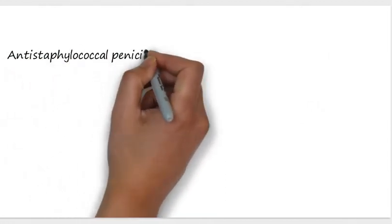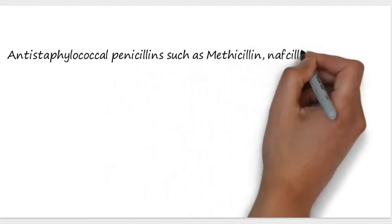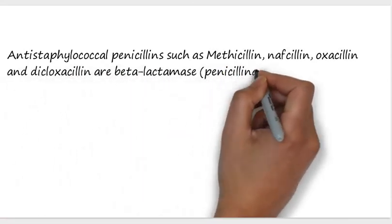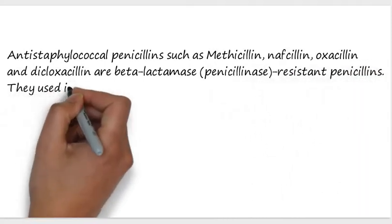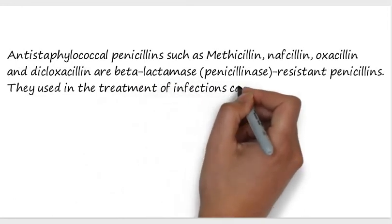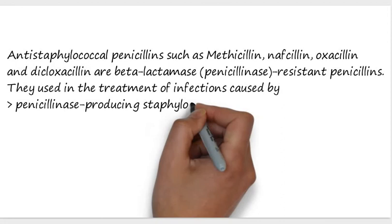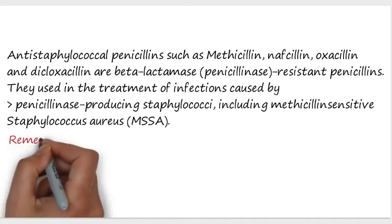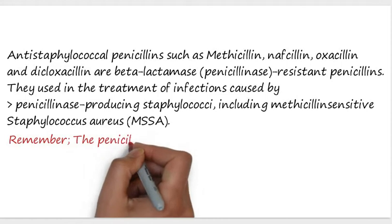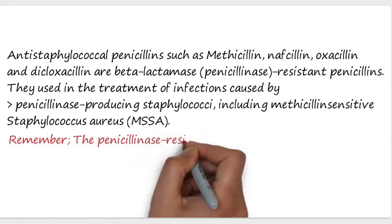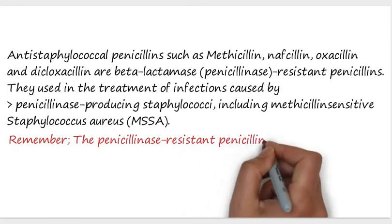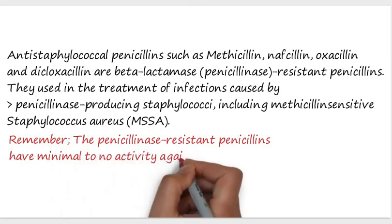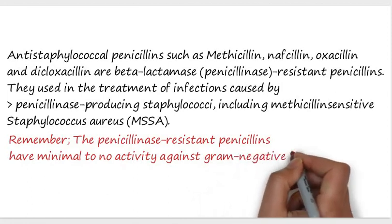Antistaphylococcal penicillins — such as methicillin, nafcillin, oxacillin, cloxacillin, and dicloxacillin — are beta-lactamase-resistant penicillins. They are used in the treatment of infections caused by penicillinase-producing staphylococcal cocci, including methicillin-sensitive Staphylococcus aureus (MSSA). It is important to remember that penicillinase-resistant penicillins have minimal to no activity against gram-negative infections.